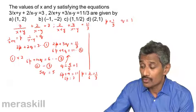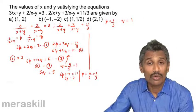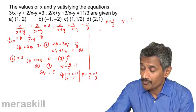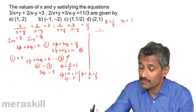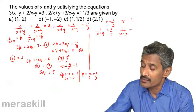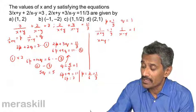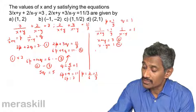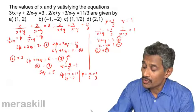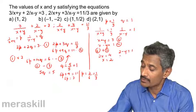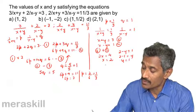Most candidates go wrong here by treating p and q as the final answers. We must resubstitute: p equals 1 by 3 means 1 upon (x plus y) equals 1 by 3, so x plus y equals 3. And q equals 1 means 1 upon (x minus y) equals 1, so x minus y equals 1. Adding these two equations: 2x equals 4, so x equals 2. Substituting: 2 minus y equals 1, so y equals 1.